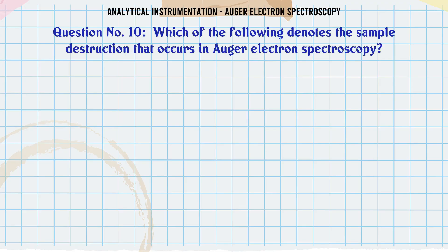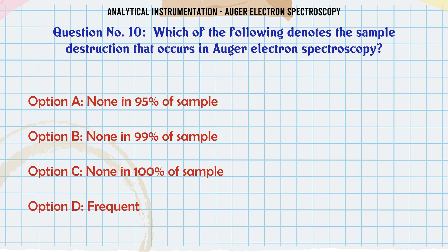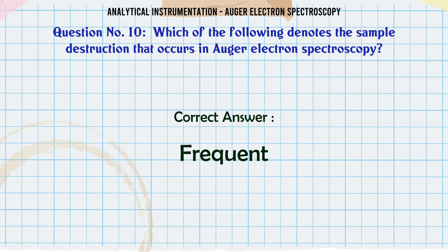Which of the following denotes the sample destruction that occurs in Auger electron spectroscopy? A. None in 95% of sample. B. None in 99% of sample. C. None in 100% of sample. D. Frequent. The correct answer is Frequent.